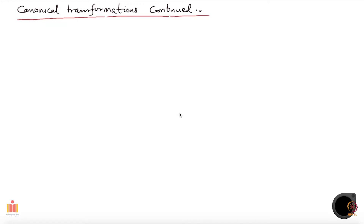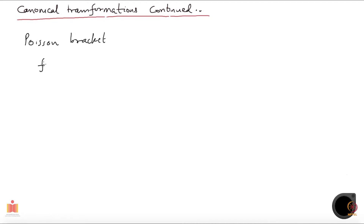We will continue our discussion on canonical transformations in this video, and I want to return to Poisson brackets that we were discussing some time back. Let me remind you what Poisson bracket is. So if you are given two functions f and g which are functions of the canonical coordinates q and p,